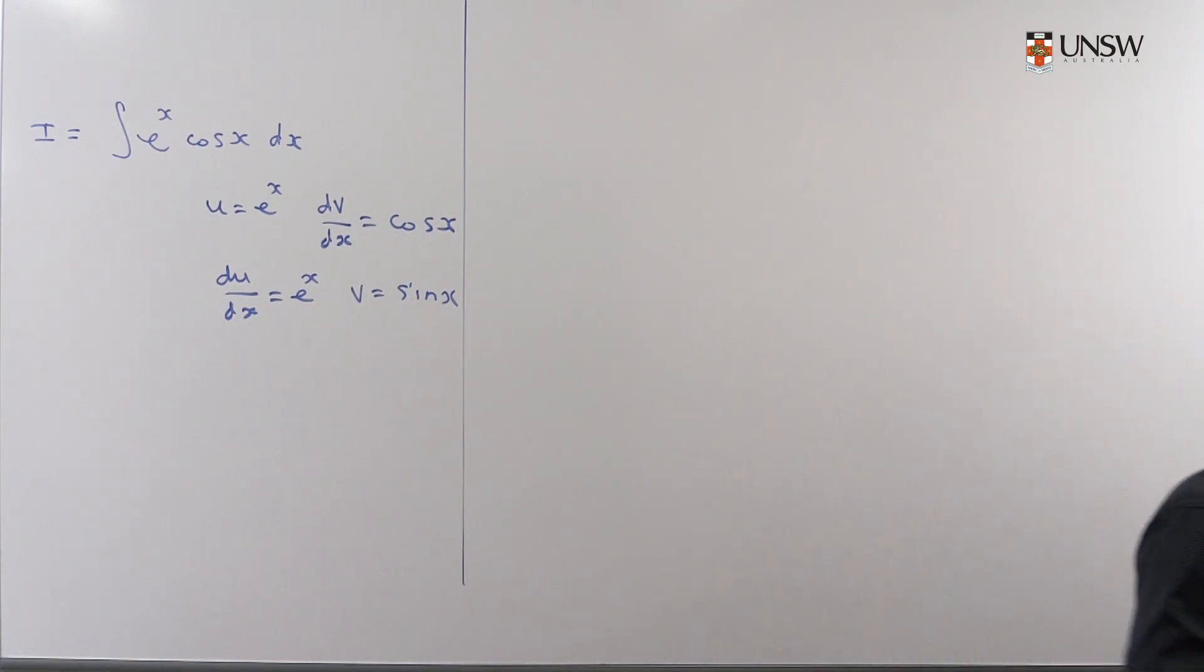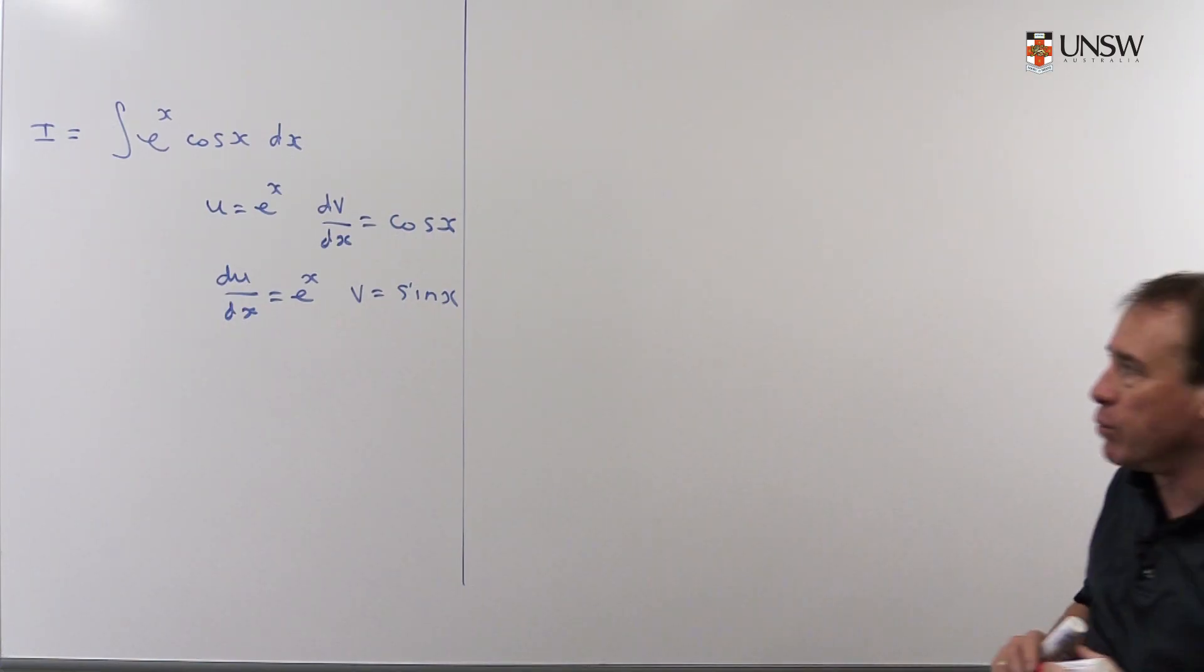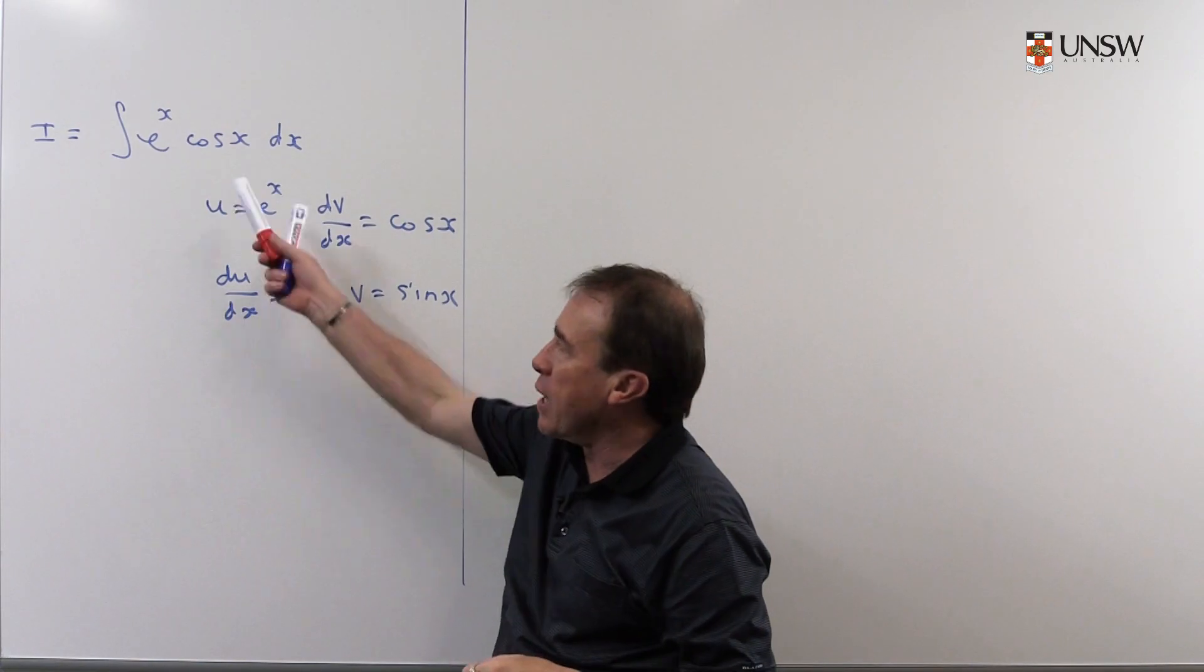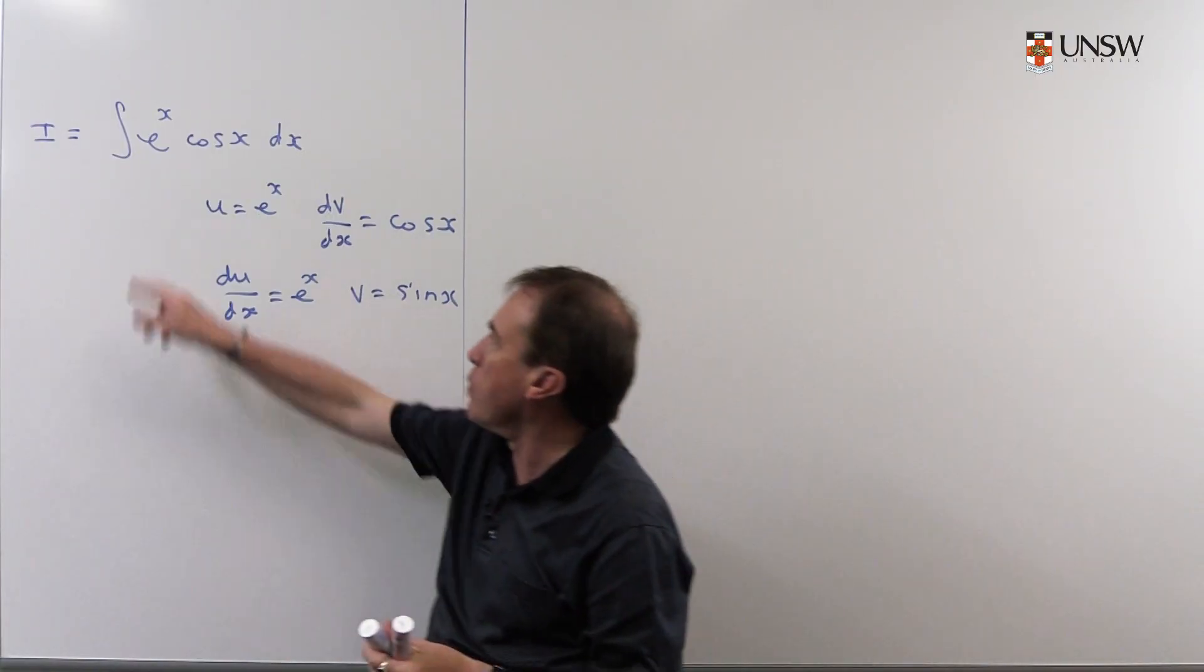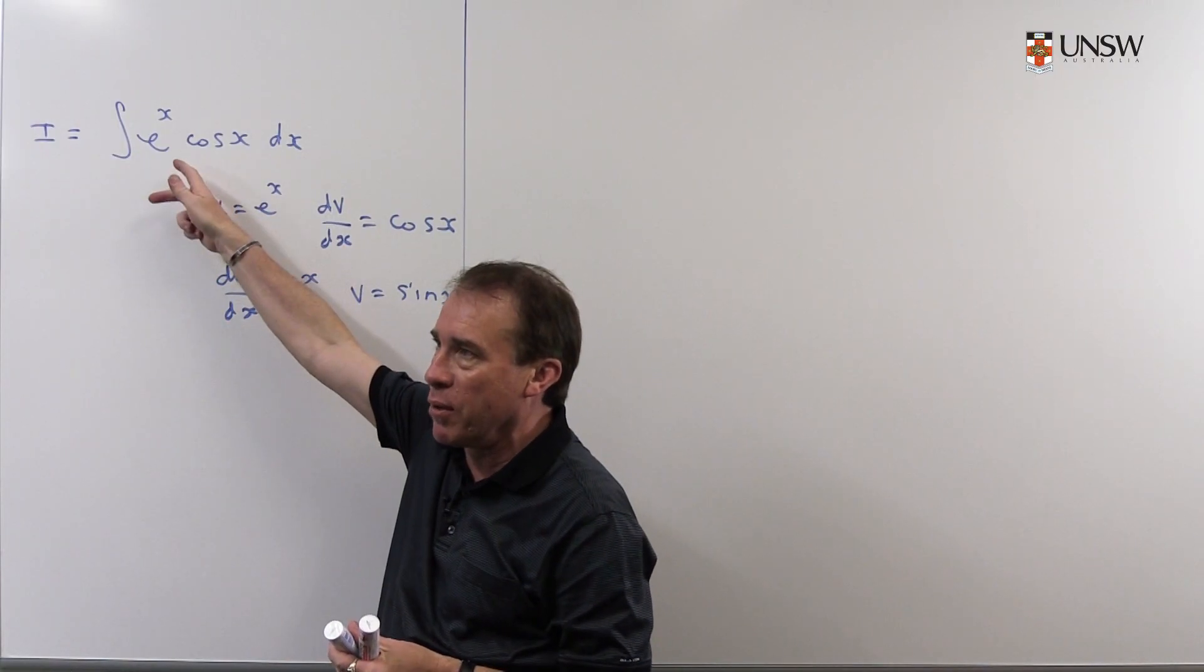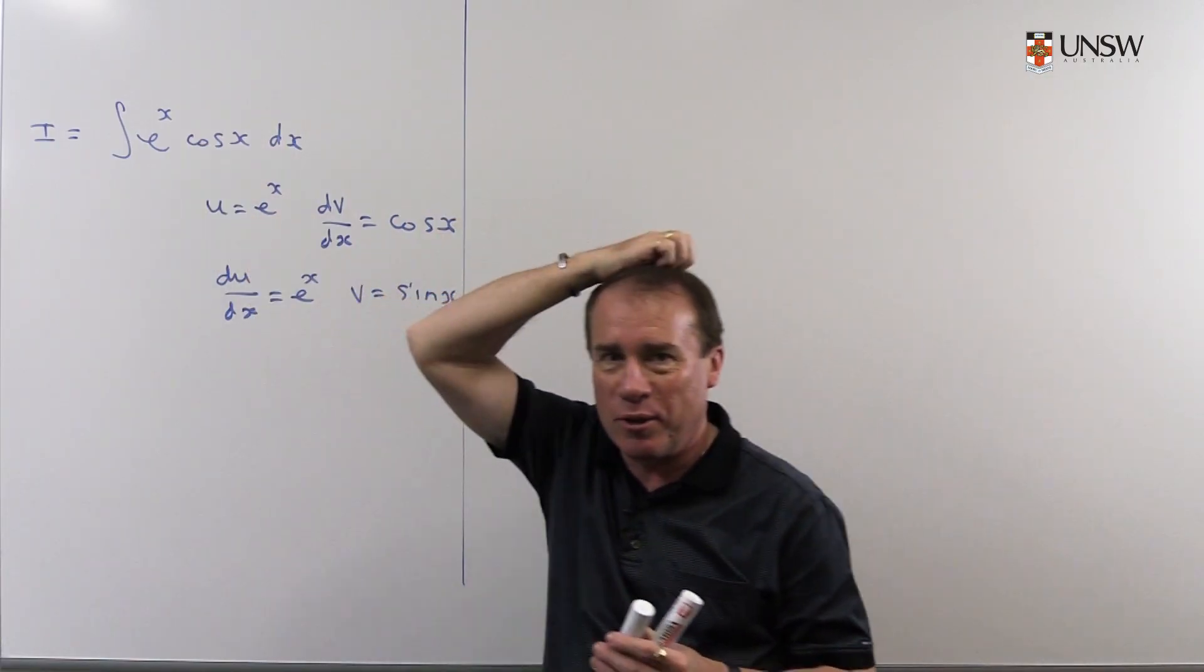Now, if you don't like learning off formulas, some people do, some people don't. The integration by parts formula is, it's the integral of u dv dx is uv minus the integral of v du dx or something.